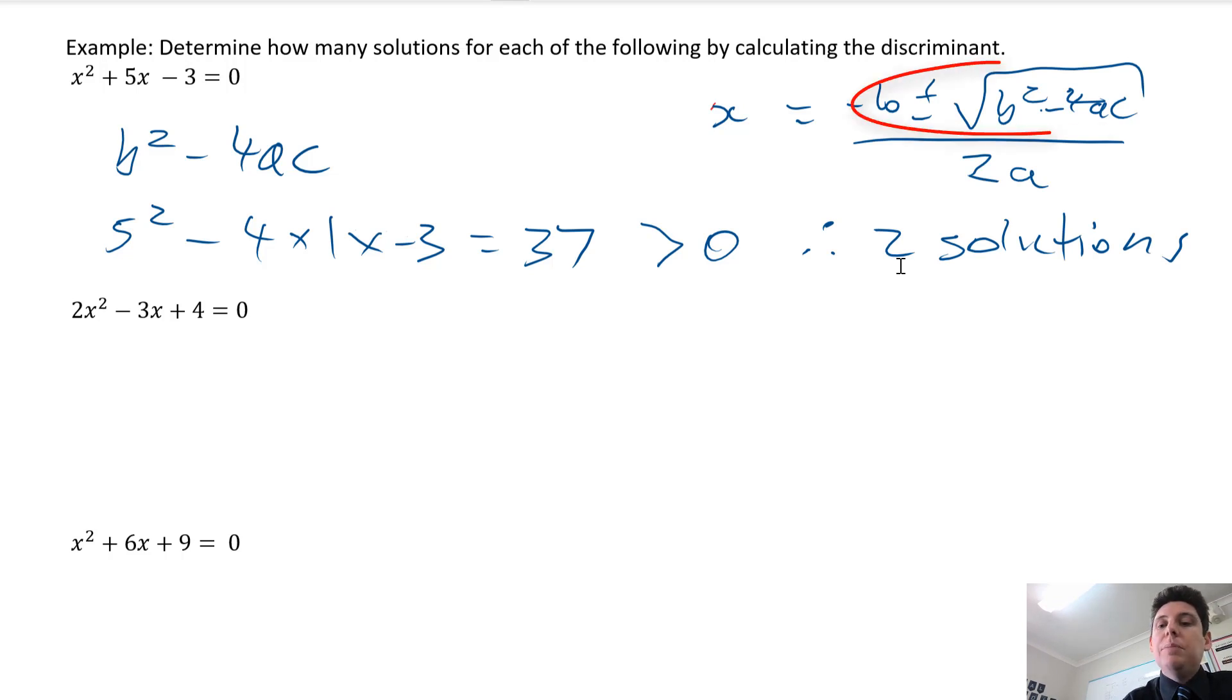Because you've got b plus or minus a number. So the plus or minus means there's plus that number or minus that number. Two solutions. This question is just asking how many solutions are there? That's all it wants to know. We're not actually solving.